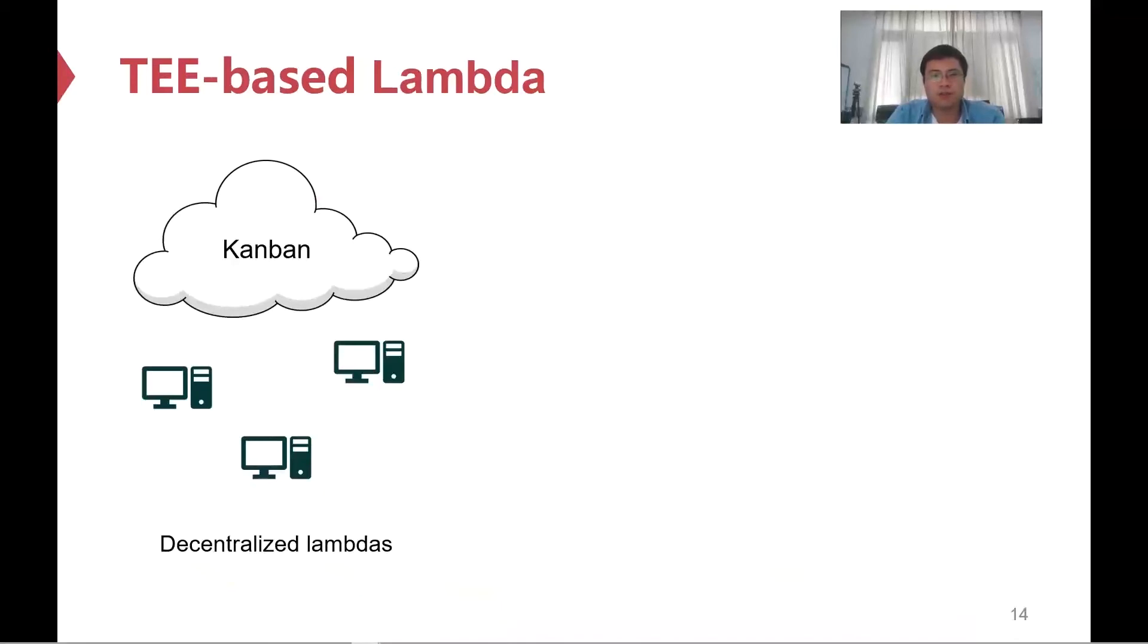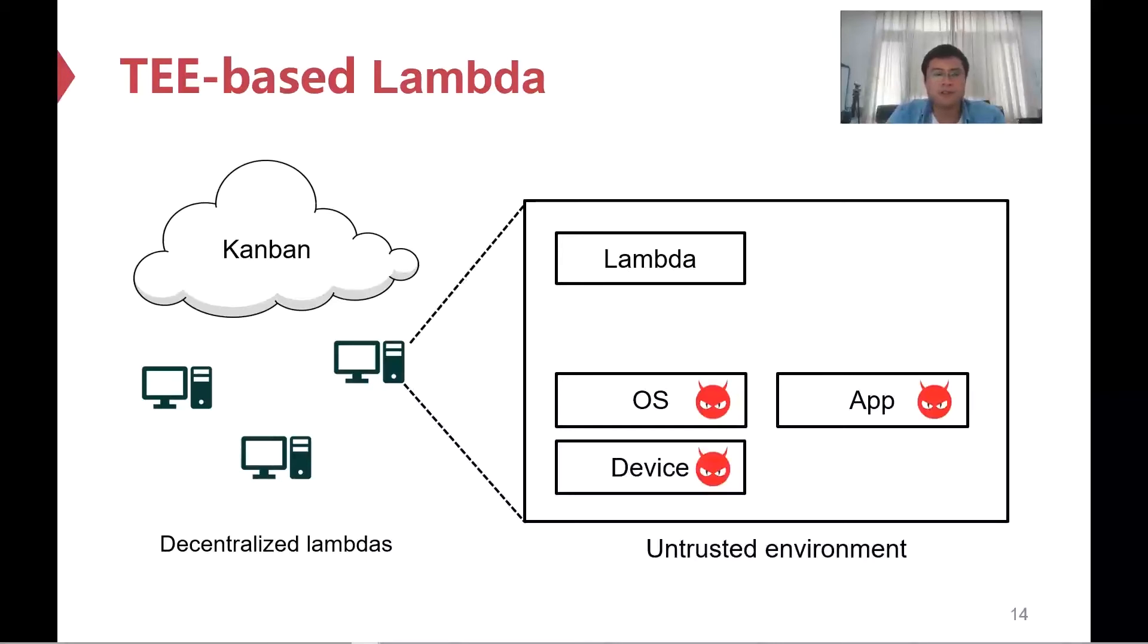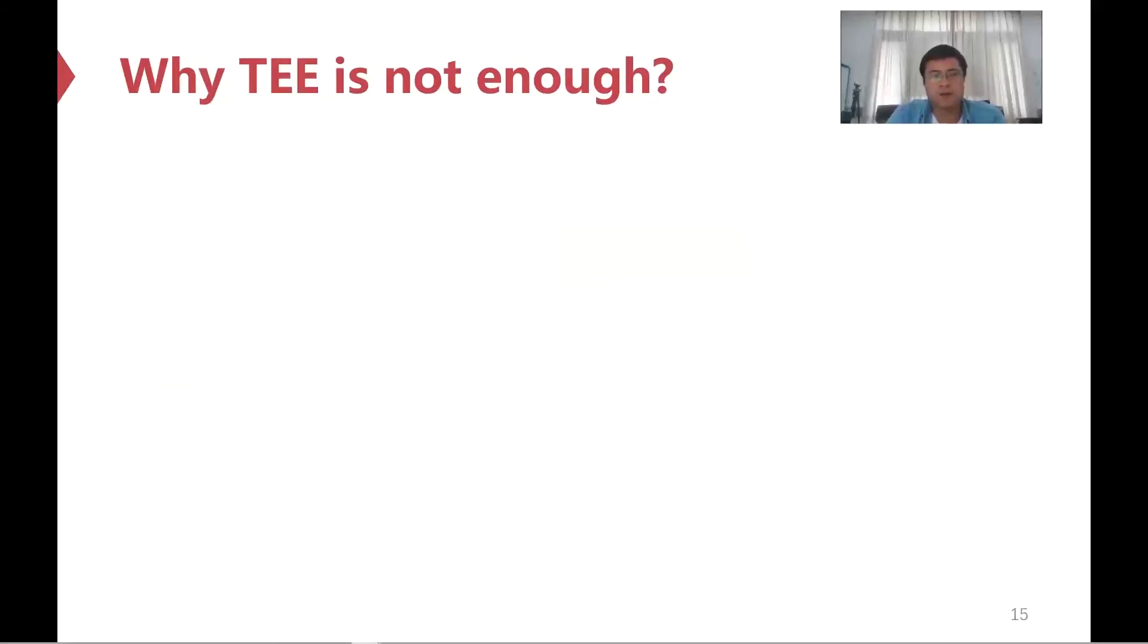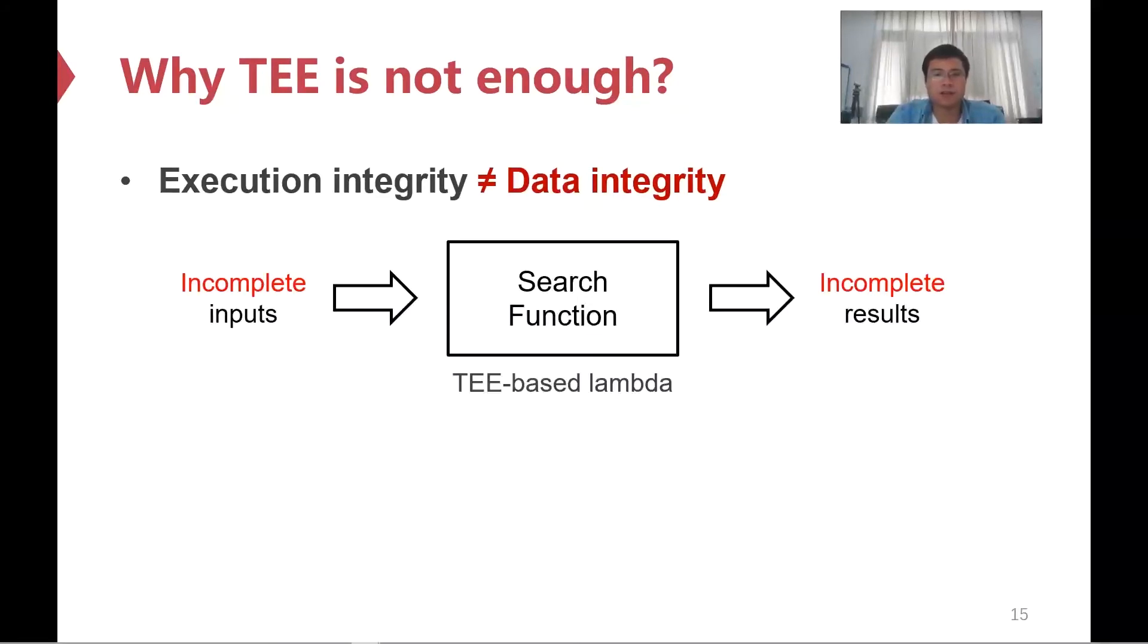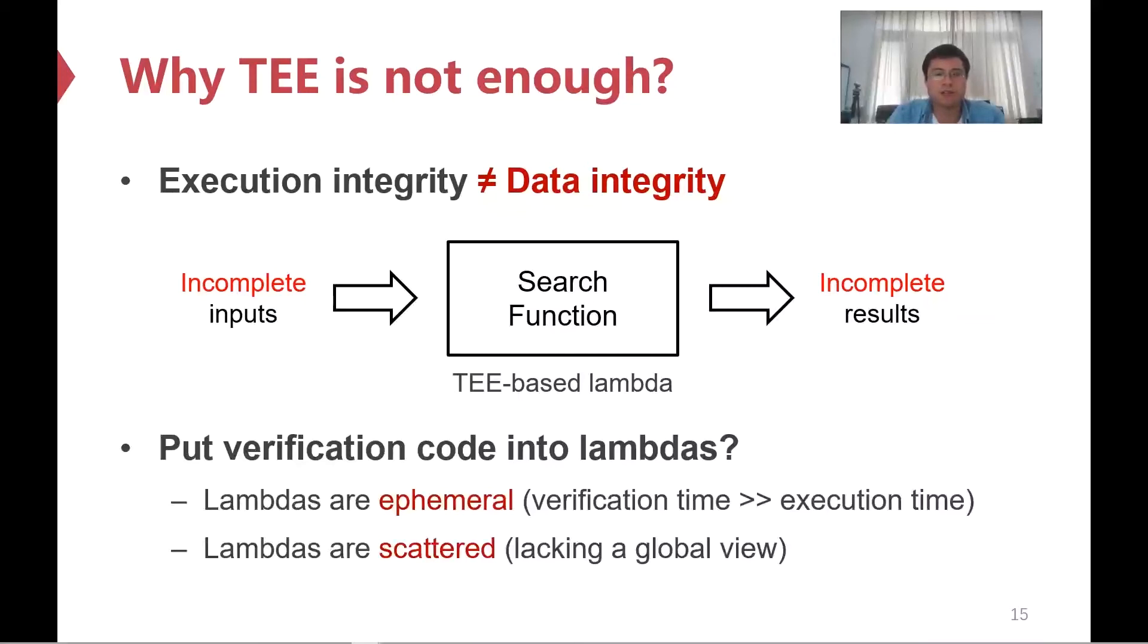Besides Kanban, how can we ensure the computation of decentralized lambdas is verifiable given an untrusted environment? Our observation is that today's desktops are openly equipped with Trusted Execution Environment, or TEE. TEE provides an isolated environment to protect both code and data from malicious apps, OS, and devices. Can we simply put the search lambdas into TEE to make sure the results are correct? Not really, because execution integrity does not mean data integrity. For example, although TEE can ensure that the search function is executed as expected, if it receives incomplete results, the final results are also incomplete. So, can we also put the verification code into TEE lambdas to ensure data integrity? Again, the answer is no. Because lambdas are ephemeral, the verification time may exceed their life cycle, and lambdas are scattered, meaning that they lack a global view.